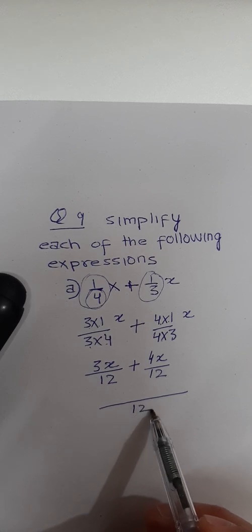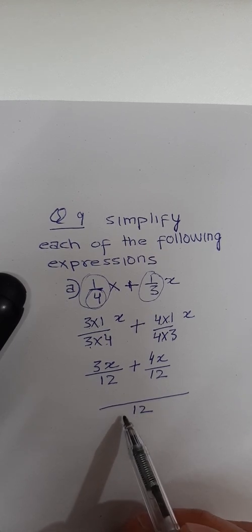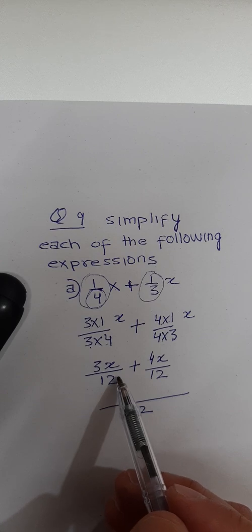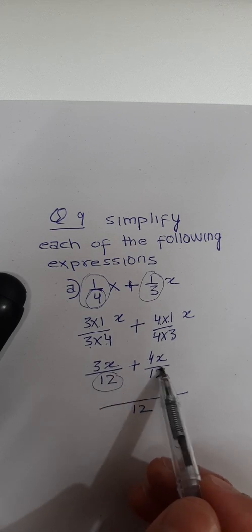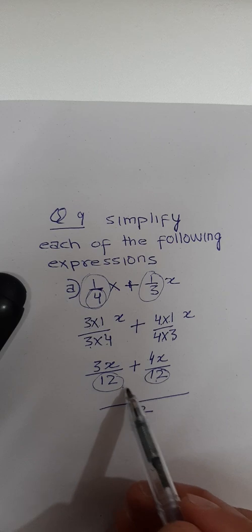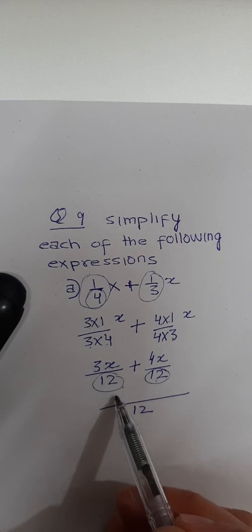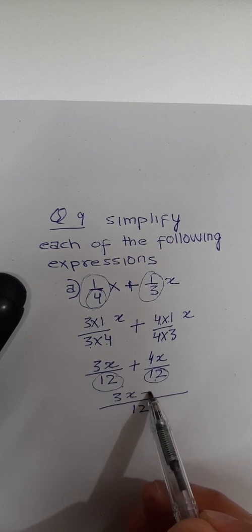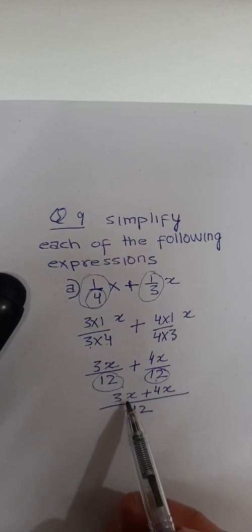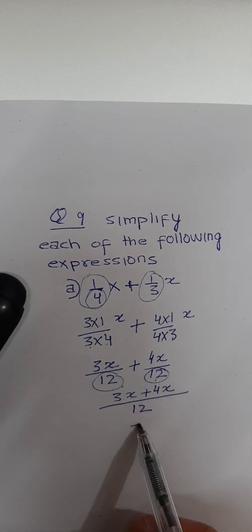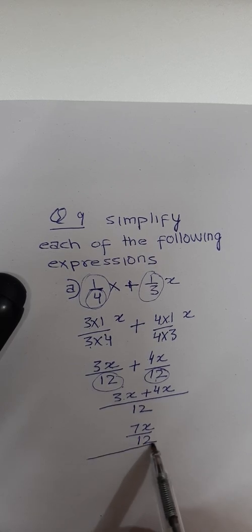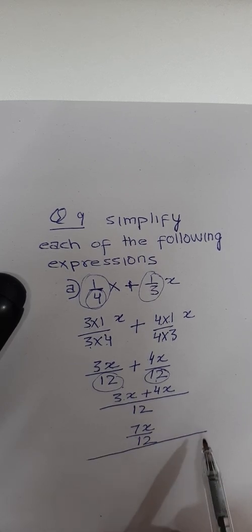Since 12 equals 12, the denominators are the same, so 12 is the LCM. Now add the numerators: 3x plus 4x is 7x. So the answer is 7x over 12.